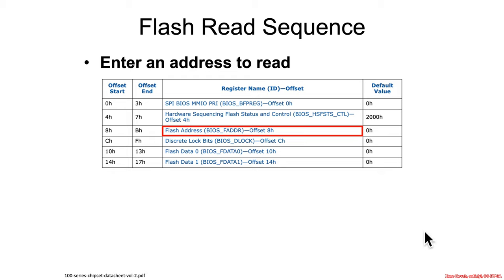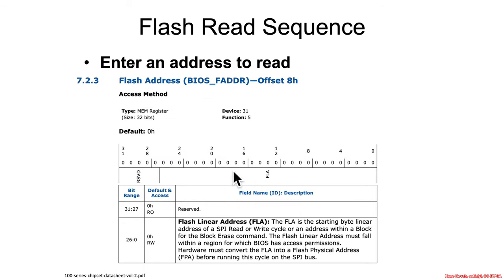Now flipping to the 100-series chipset: it is again at offset 8, the flash address register, here called BIOS_FADDR. It looks essentially the same — some number of bits specifying a flash linear address — although interestingly it appears to be 27 bits. This again tells us that Intel is doing something non-standard, somehow allowing access to larger SPI flash chips and/or the concatenation of more SPI flash chips.